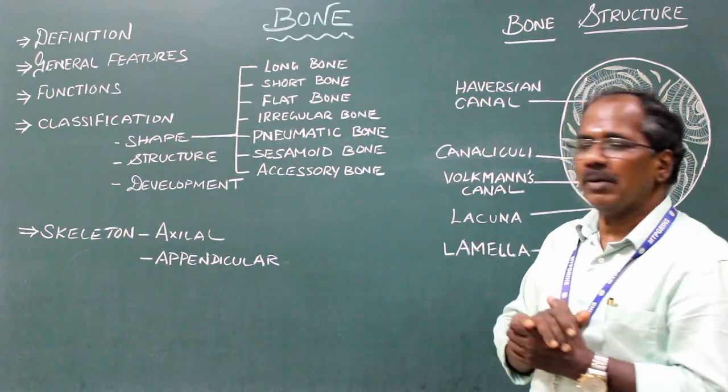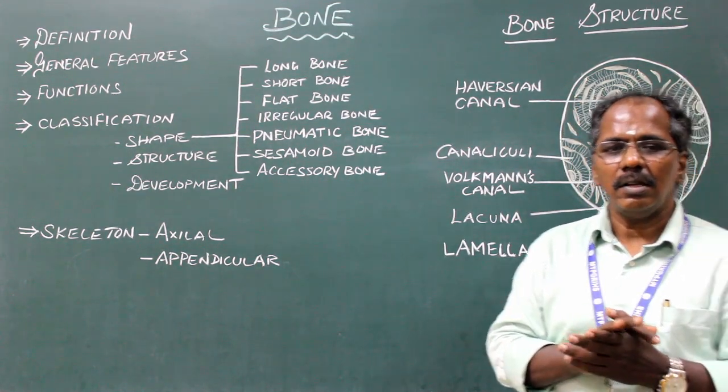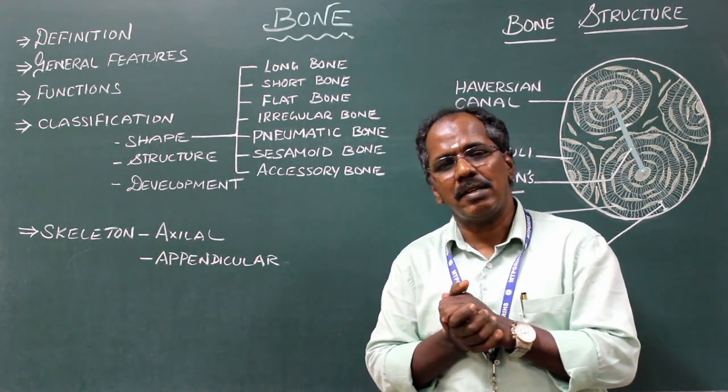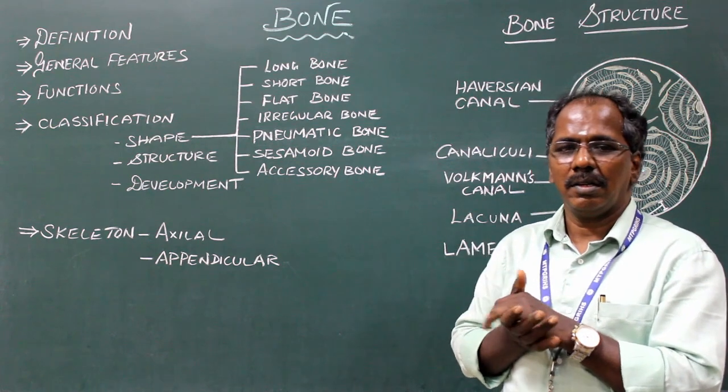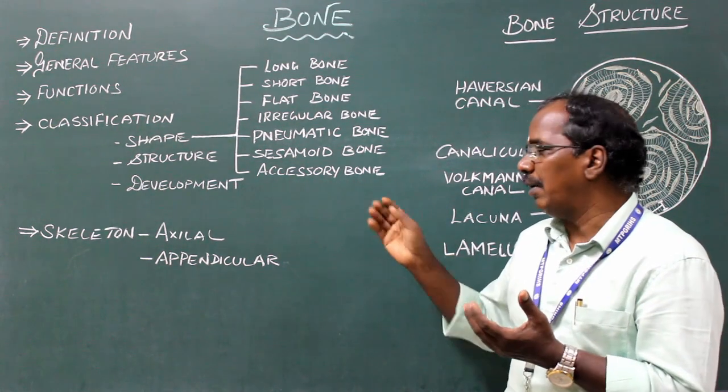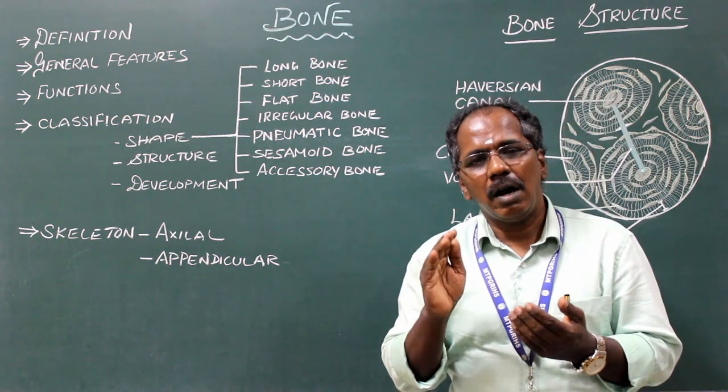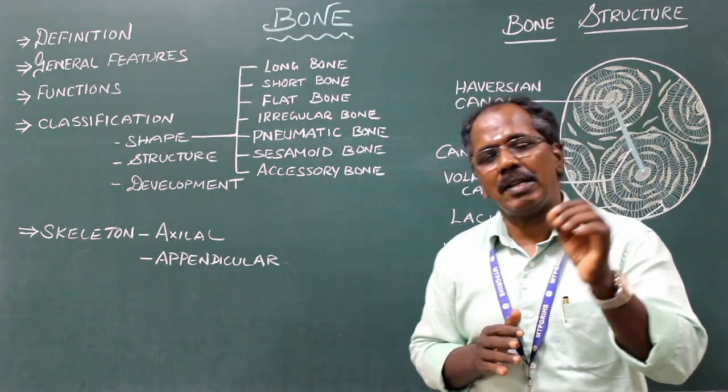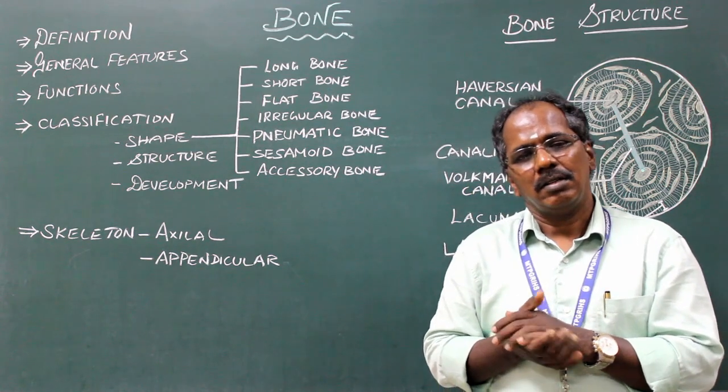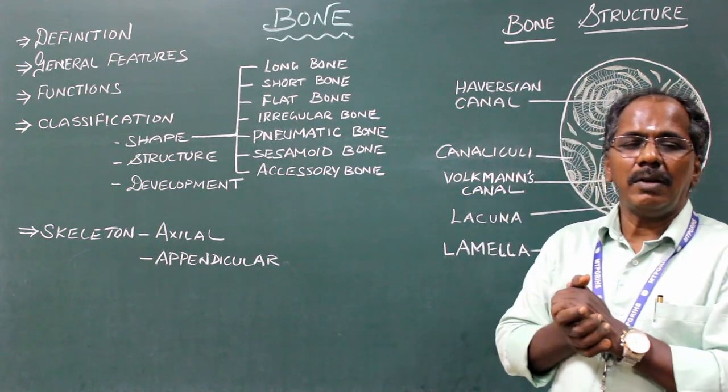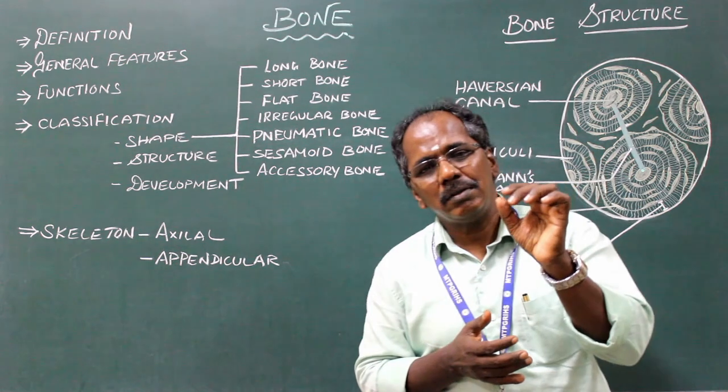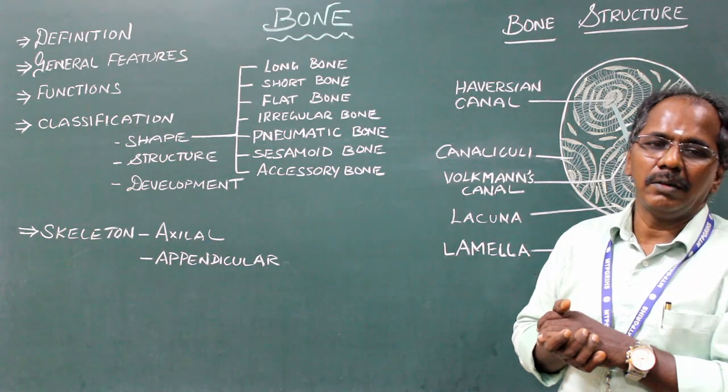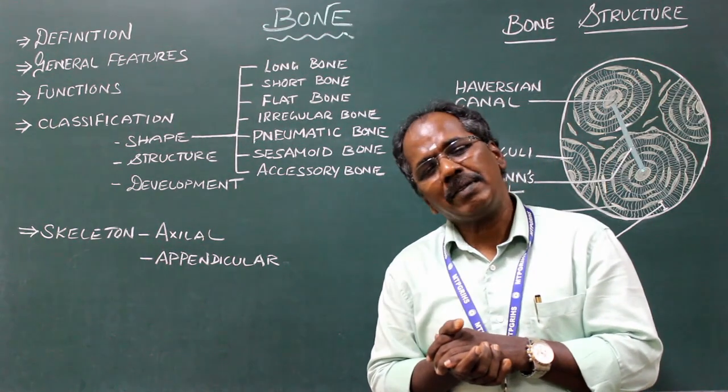Accessory bones are usually absent. In rare conditions, they are present. They are developed due to non-fusion of secondary ossification centers. For example: wormian bone present in the sutures, os trigonum, os navicular.